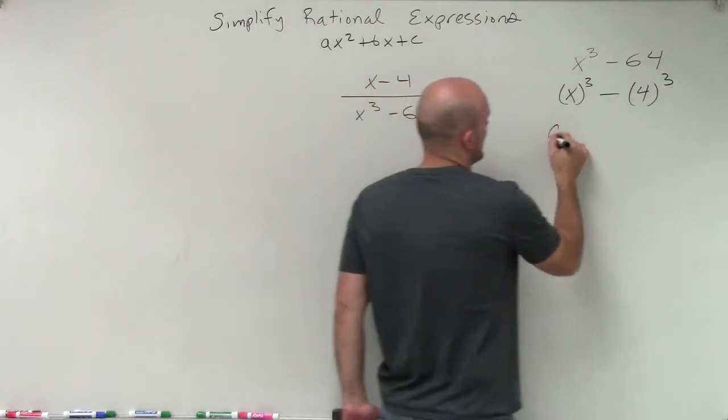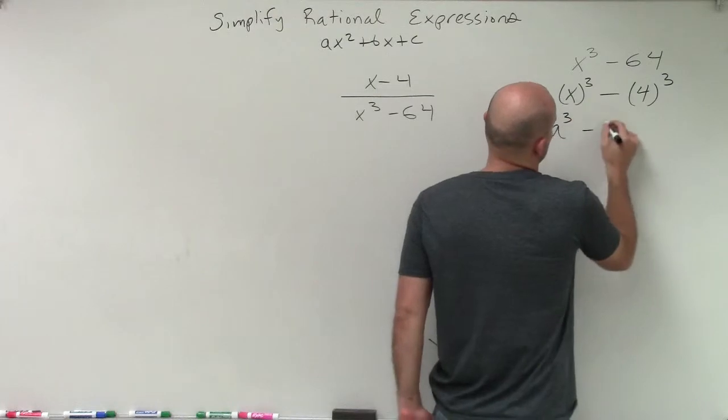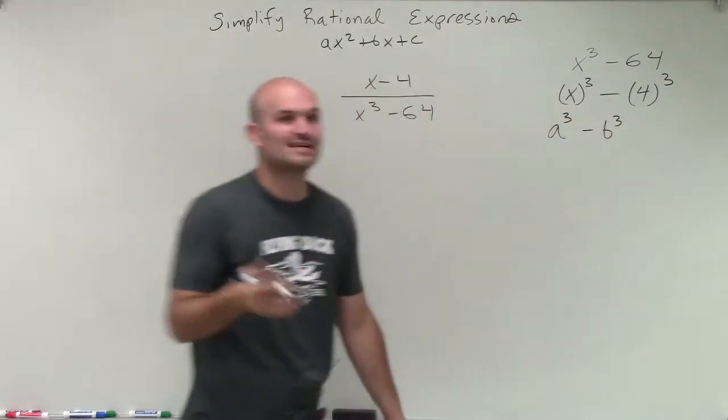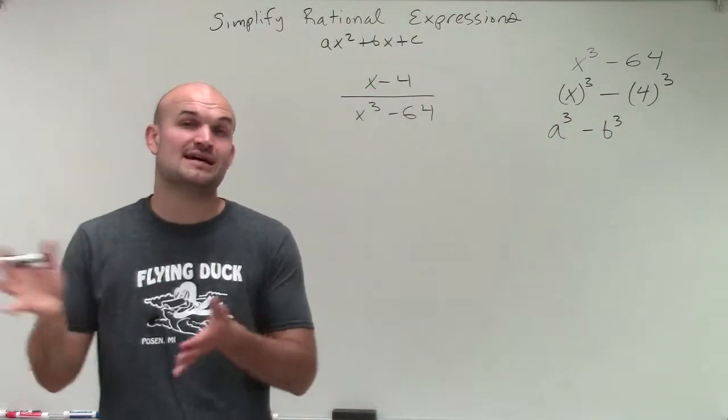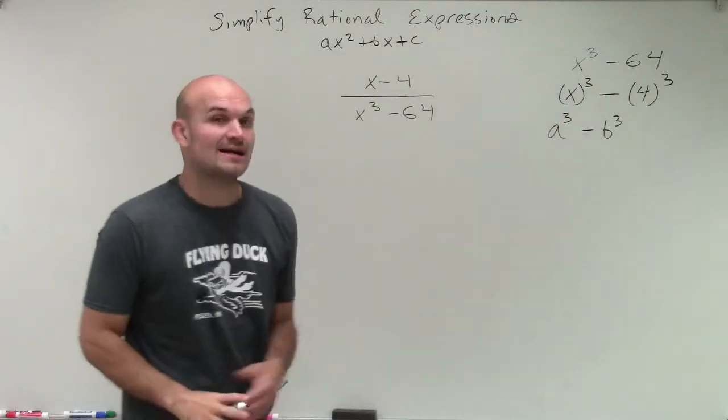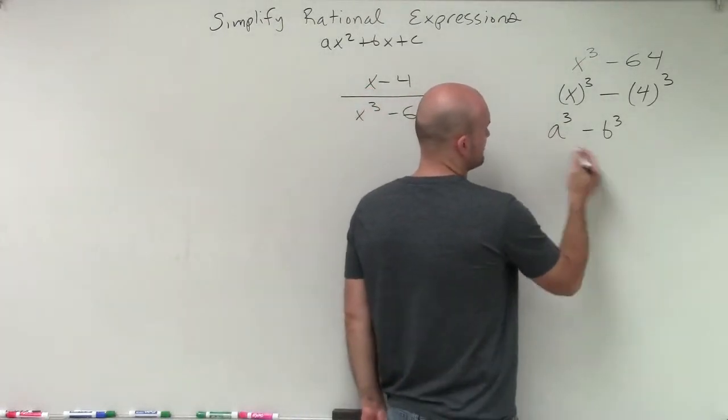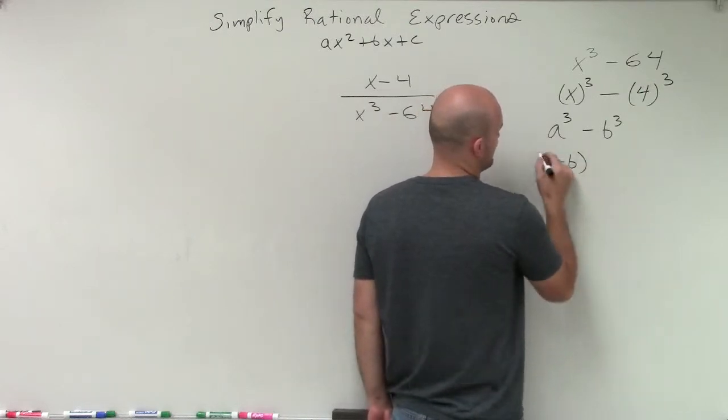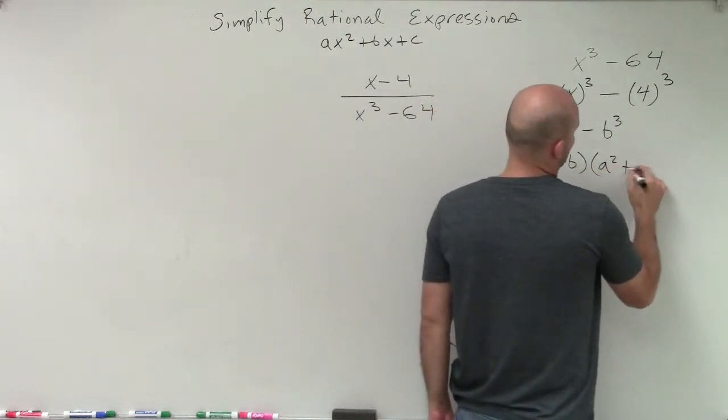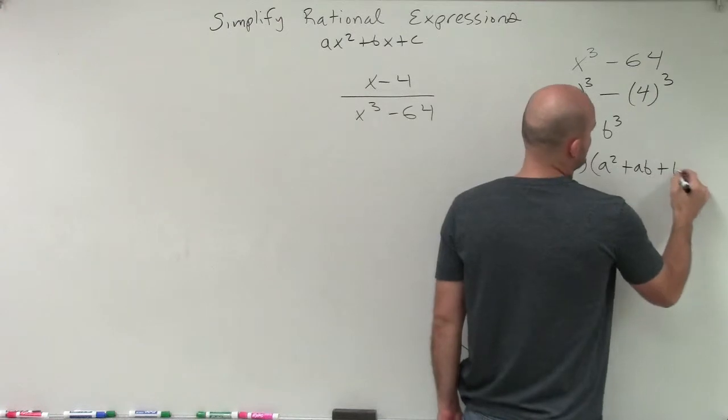So there's a special rule that we have when we have a cubed minus b cubed. Just like when we had a squared minus b squared was a plus b times a minus b, we can factor when we have a difference of two cubes. So the factoring of difference of two cubes in this format is a minus b times a squared plus ab plus b squared.